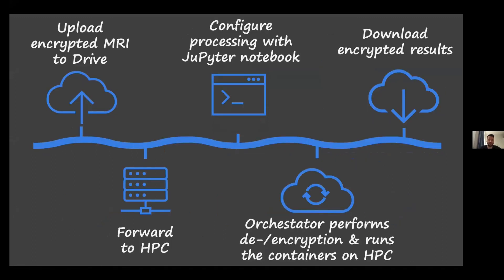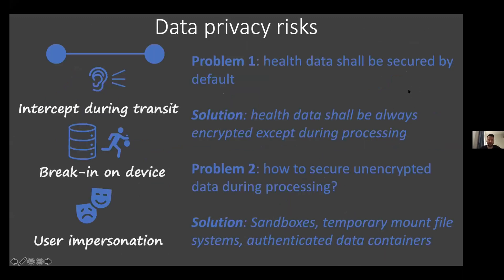Practically, such a workflow would look like this: we upload our encrypted MRI data to eBrains drive, then forward it from there to the supercomputer, then configure the processing with a Jupyter notebook on eBrains lab. On the supercomputer, an orchestrator performs most of the logic of the workflow and the security aspects — it performs the decryption, encryption, runs and schedules the containers, and generates the batch scripts needed to send jobs to the job scheduler of the supercomputer. When we are done, we can then download the encrypted results.